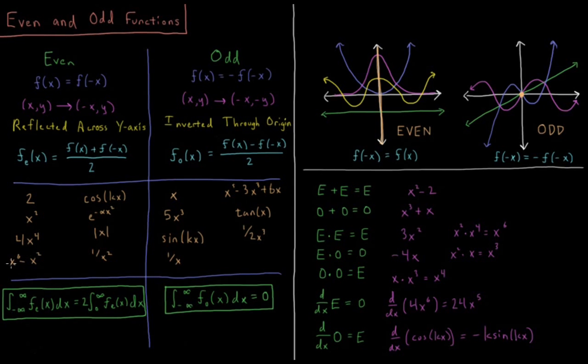We see that here, where we have the two even polynomials summed together. Odd plus odd equals odd. Odd plus even is going to give you neither even nor odd, something that has a component of both.